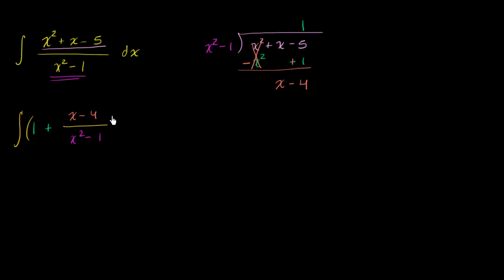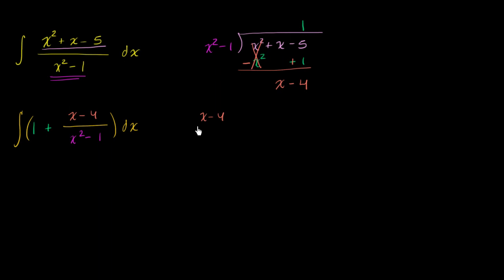We can take out another tool in our algebraic toolkit: partial fraction expansion. This essentially means writing x minus four over x squared minus one as the sum of two rational expressions with lower-degree denominators. We can factor x squared minus one as x plus one times x minus one, so let's rewrite this term as x minus four over x plus one times x minus one.